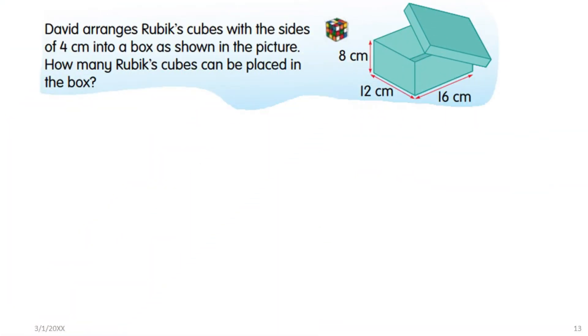Look at example two. David arranges Rubik's cubes with the sides of 4 centimeters into a box as shown in the picture. How many Rubik's cubes can be placed in the box?